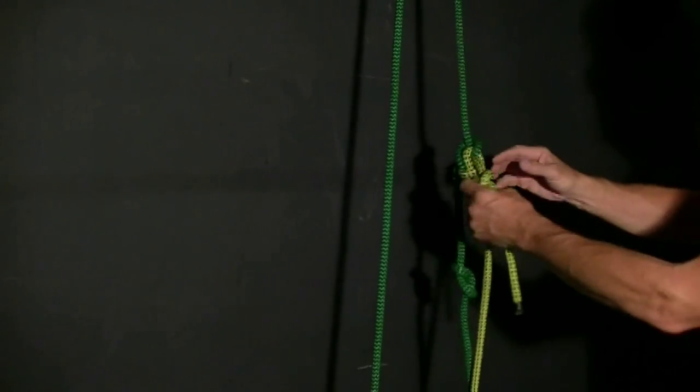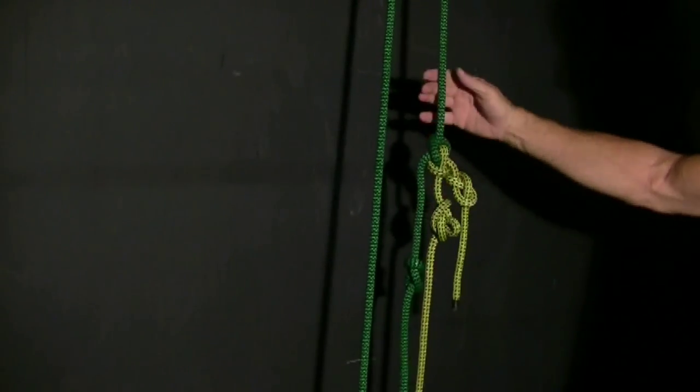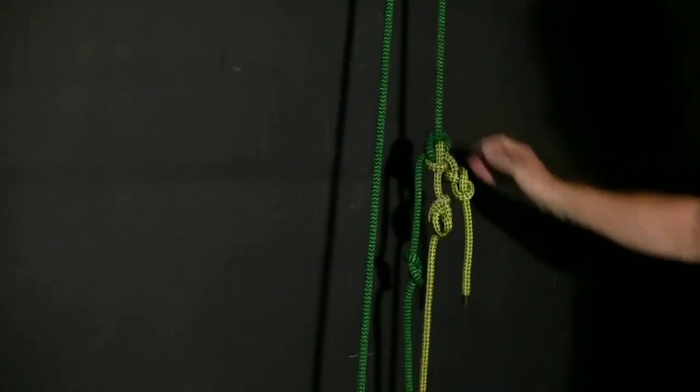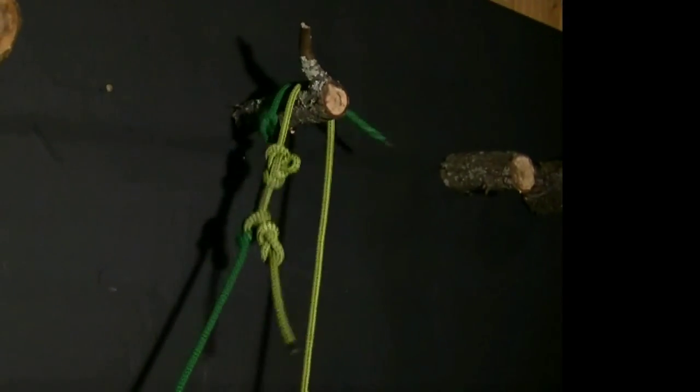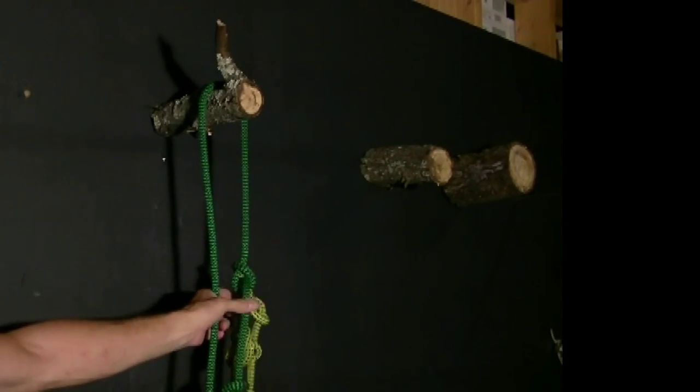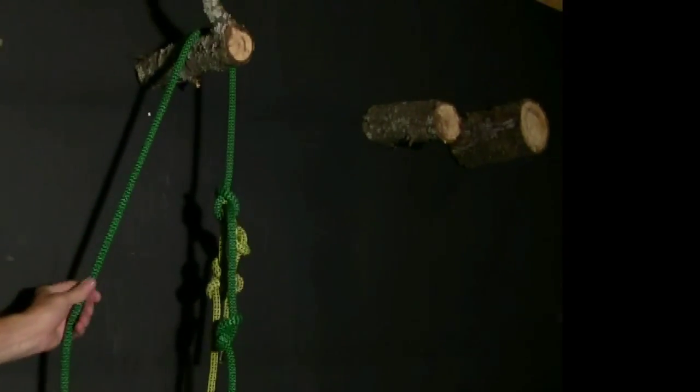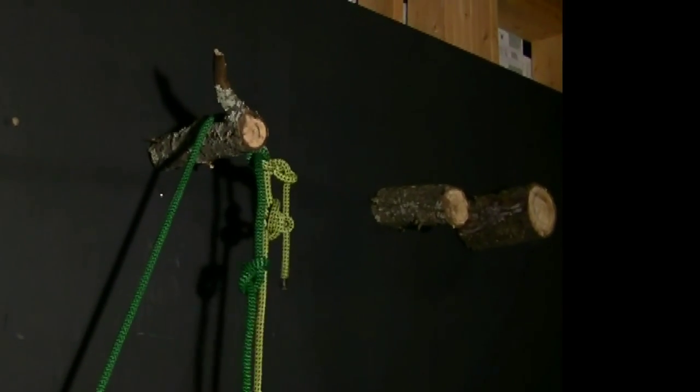The structure of this knot also makes it fairly easy to pull up and over a branch. It bends really well and comes up and over the crotch or your branch. Even if you have 200 feet of climbing line hanging down with 20 pounds of weight, it still comes up and over pretty well.